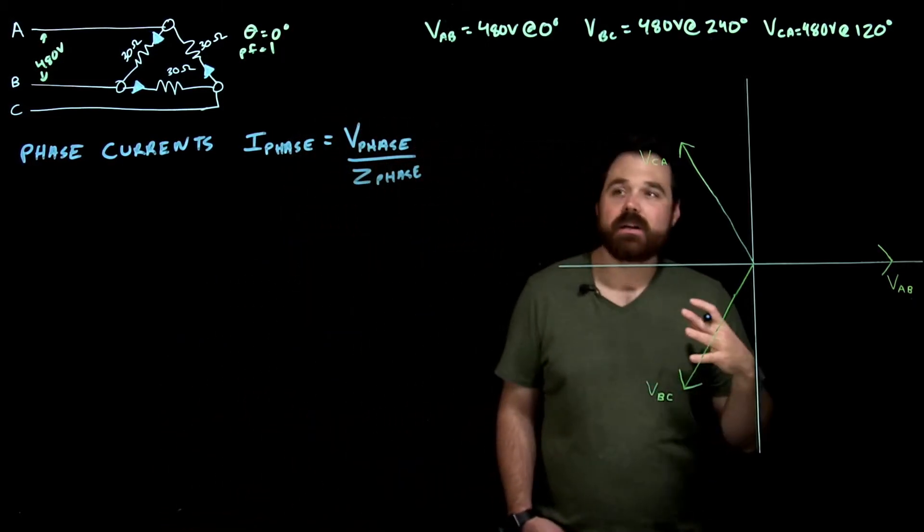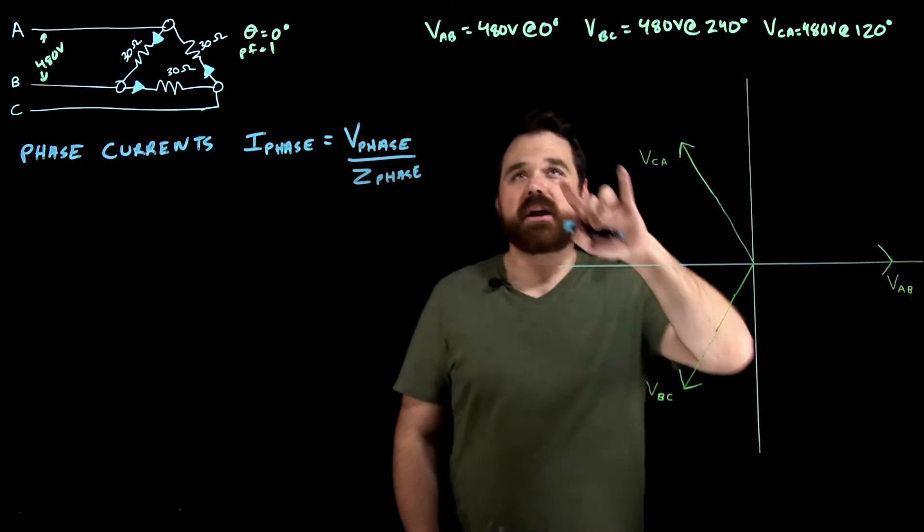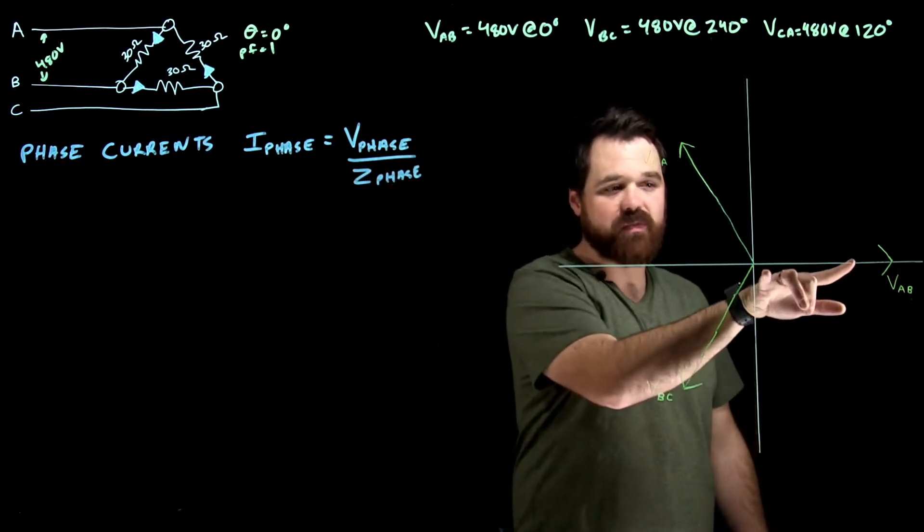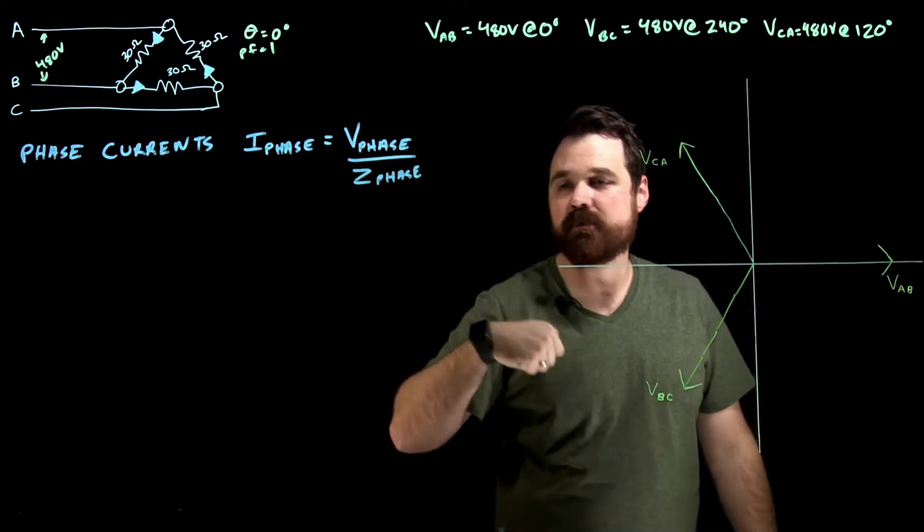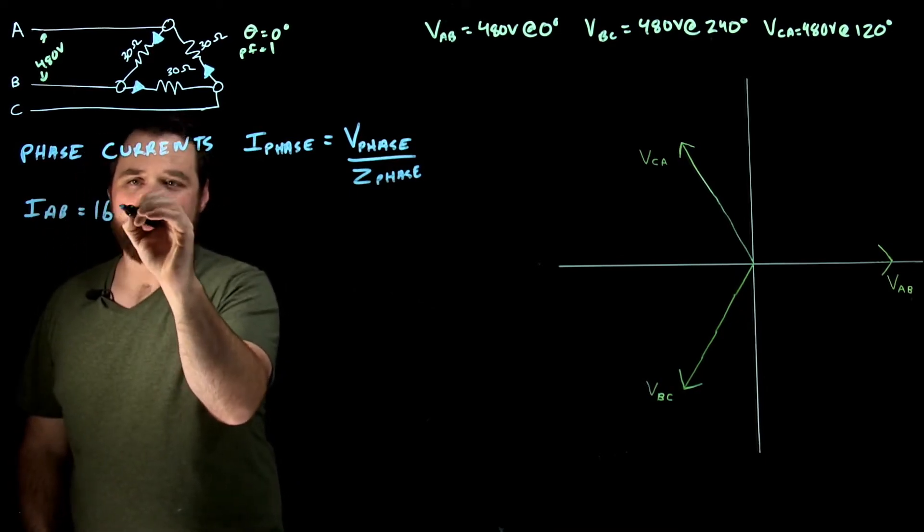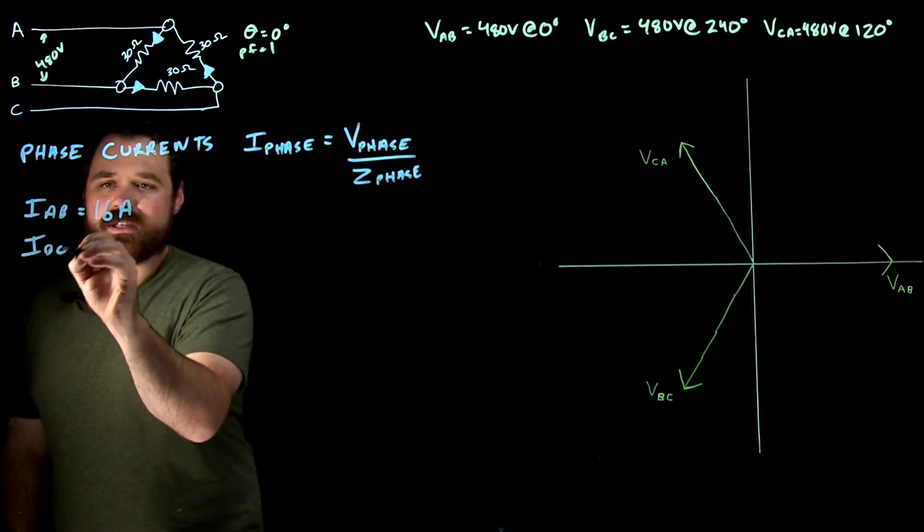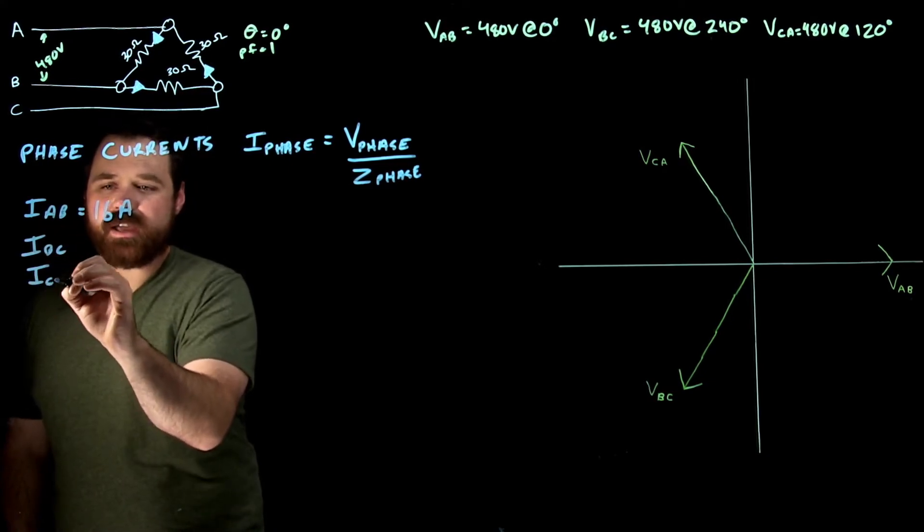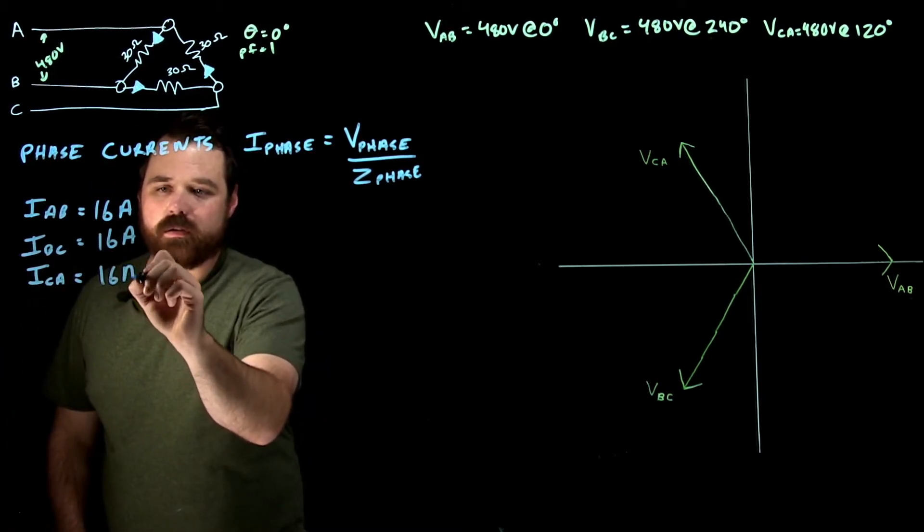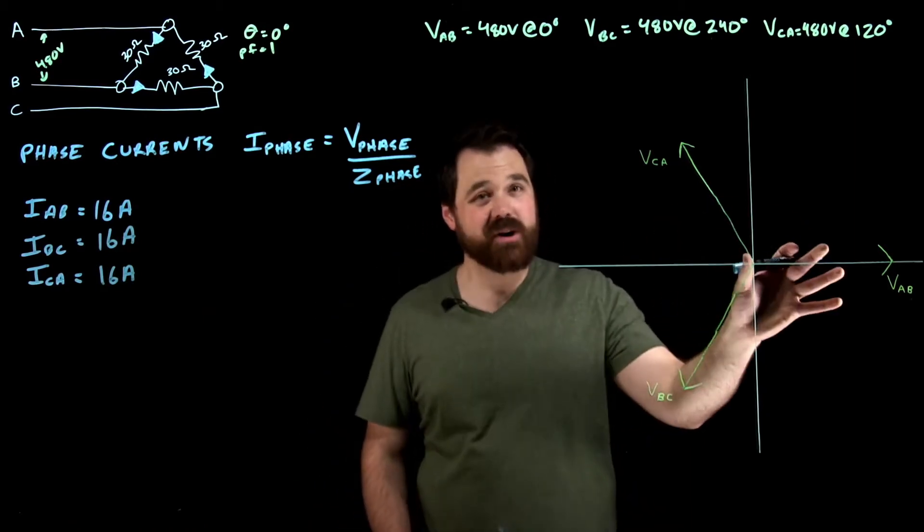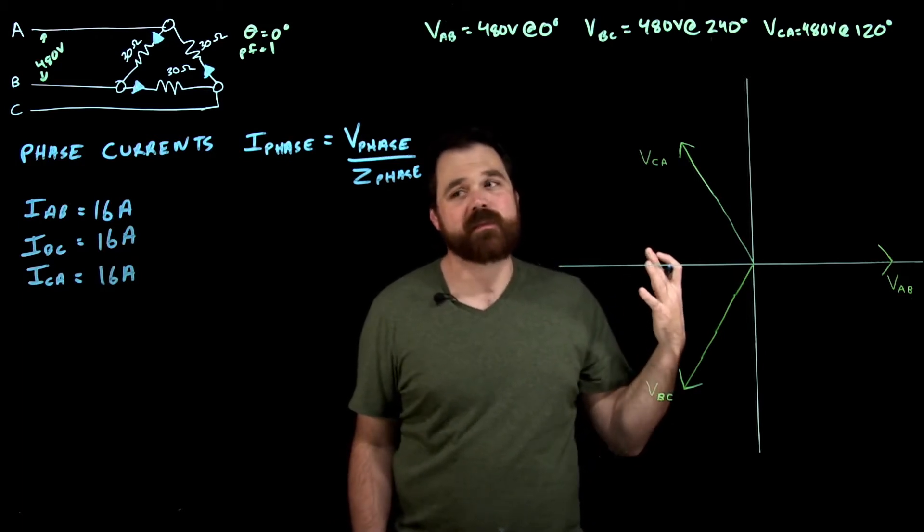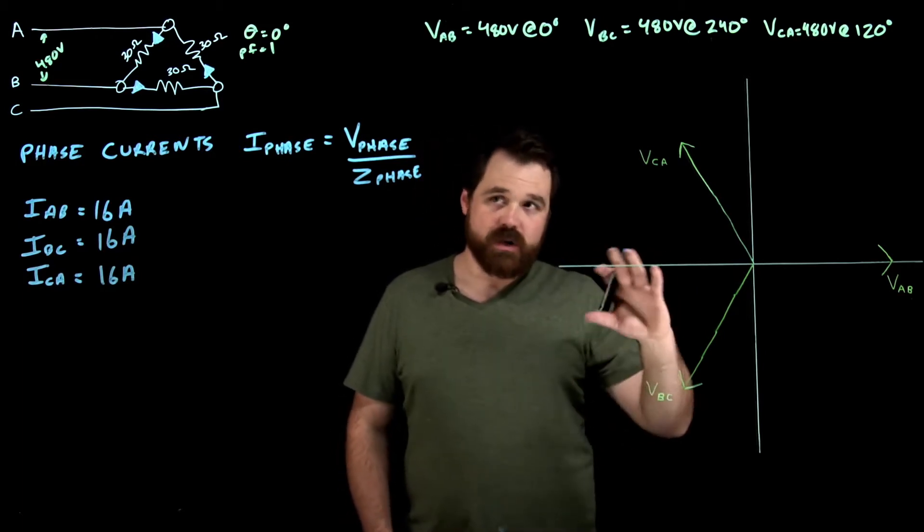In this case, I know I have 480 volts and I have 30 ohms. So 480 volts A to B divided by 30 ohms gives me an I A to B of 16 amps. Same thing with B to C and same thing again with C to A, they all equal 16 amps because they're all 480 volts and they all have that 30 ohm resistor.